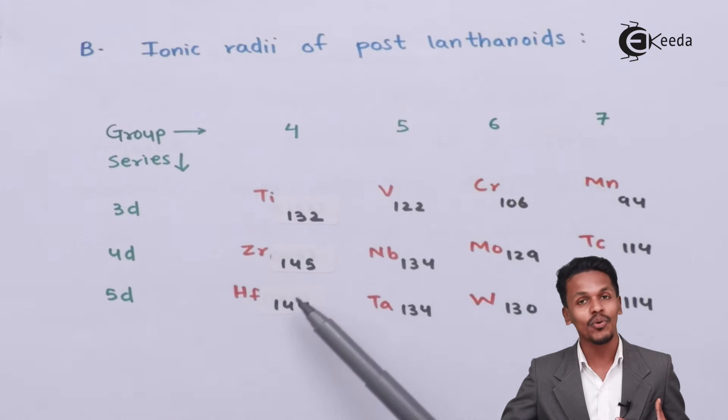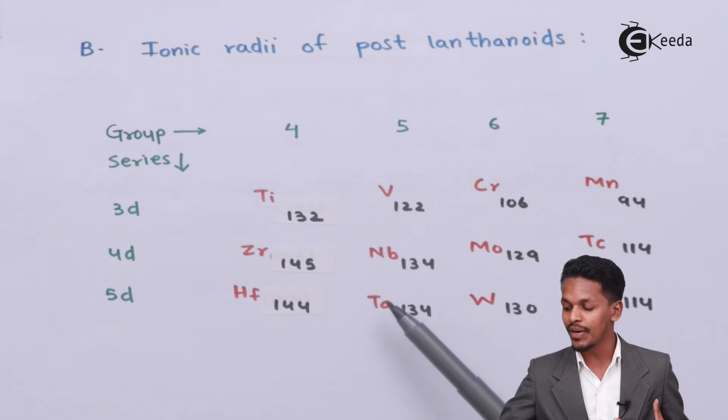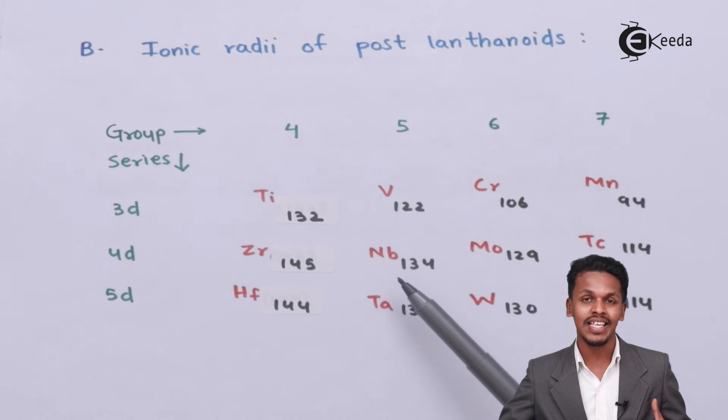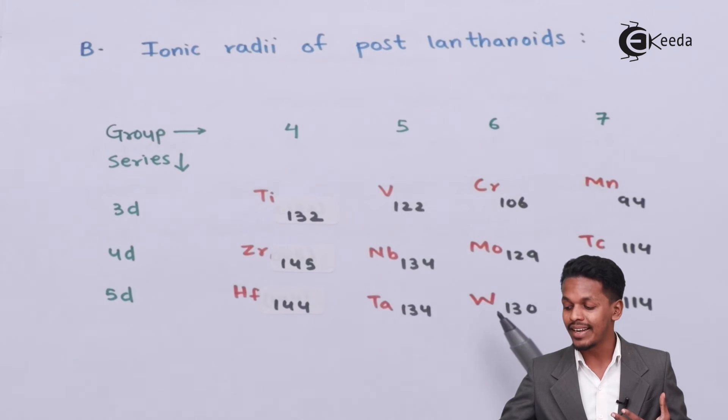Zirconium-hafnium is a chemical twin. Niobium and tantalum is also a chemical twin because of their similar atomic size and similar chemical properties. Molybdenum and tungsten is also a pair known as a chemical twin.